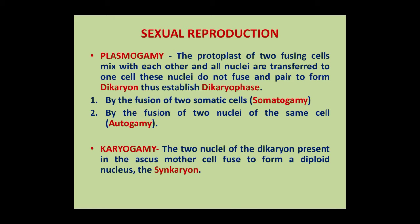In somatogamy, there is a fusion of two somatic cells of different hyphae. While in autogamy, there is a pairing of two nuclei of the same cell.